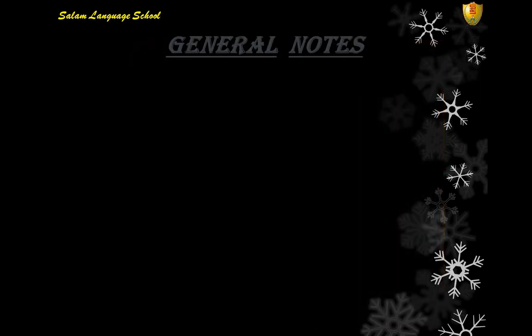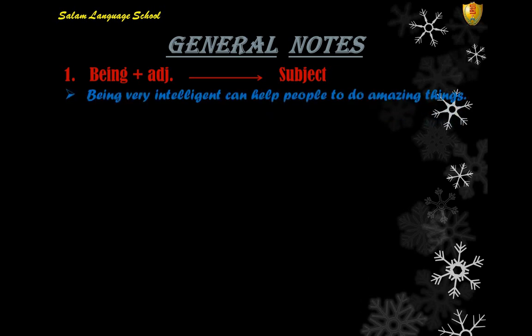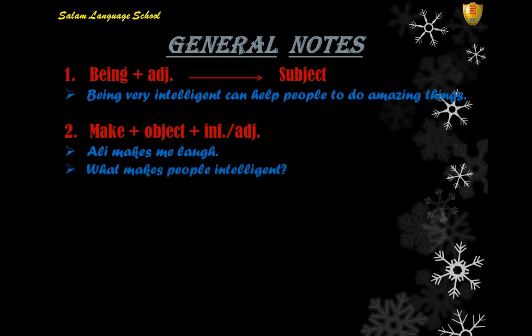Now back to some grammar notes. First: 'being' plus an adjective can be used as a subject phrase. For example: 'Being very intelligent can help people to do amazing things.' Number two: the verb 'make' — 'make' plus an object is followed by an infinitive or an adjective. For example: 'Ali makes me laugh' — infinitive. 'What makes people intelligent?' — adjective.